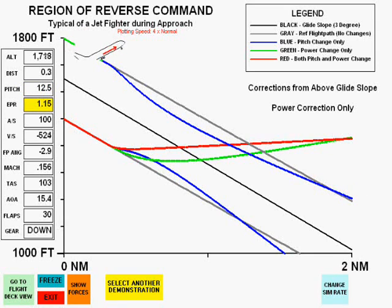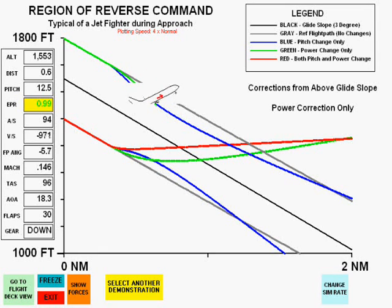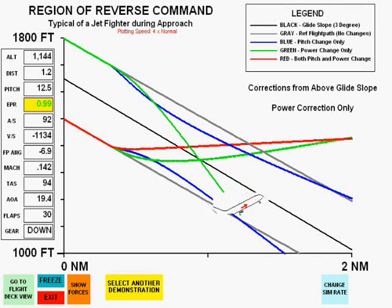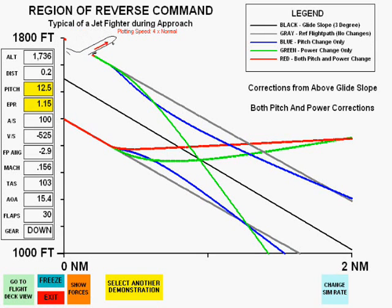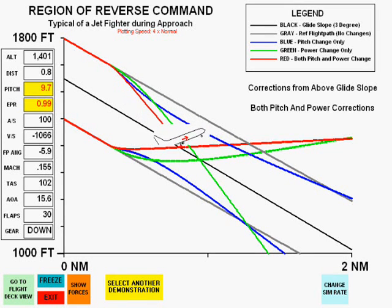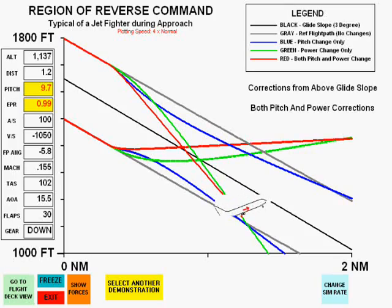The change in power does make a change toward the glide slope, although initially not quite as fast as pitch alone. But as we saw before, the change in pitch and power is by far the most timely change, and this flight path does not deviate.